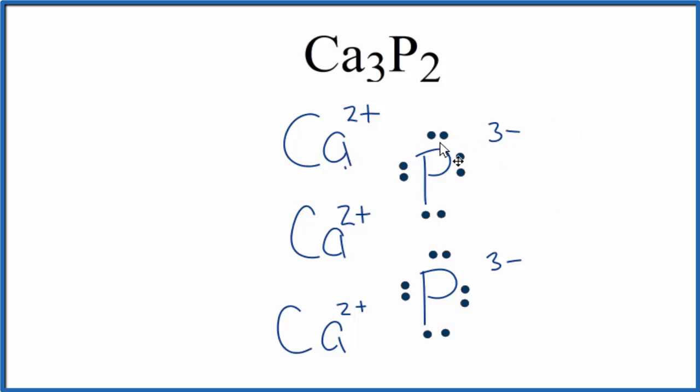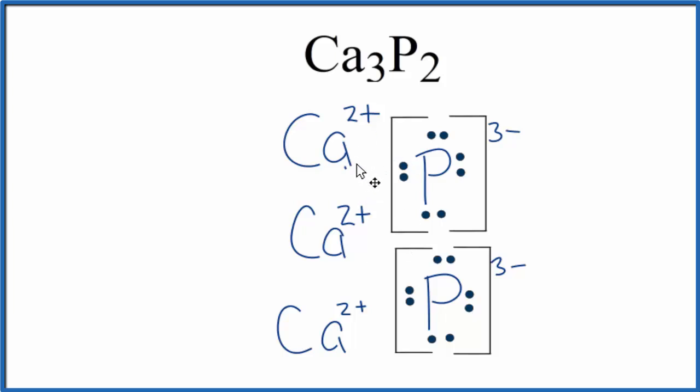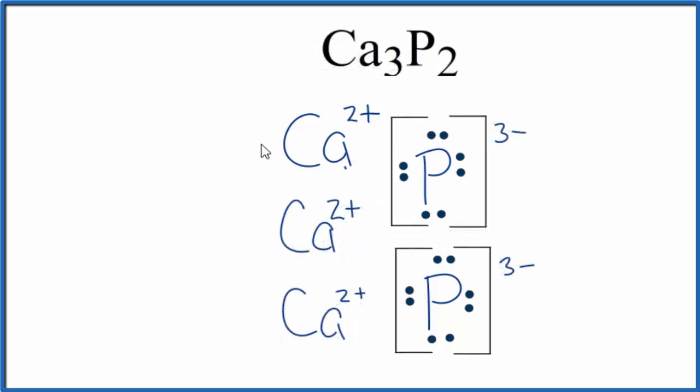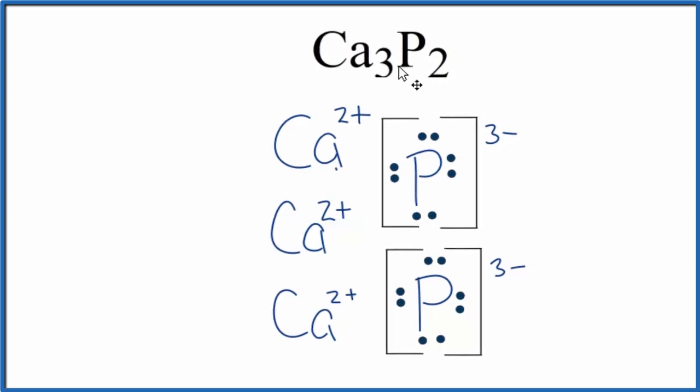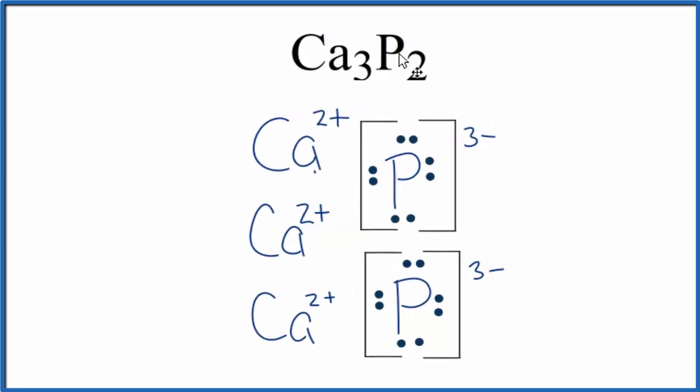Because the electrons were transferred, they're not shared between the phosphorus and the calcium atoms, let's put brackets around each phosphorus. Often you'll see brackets around the positive ions as well. So this is the Lewis structure for Ca3P2, calcium phosphide.